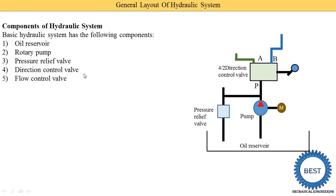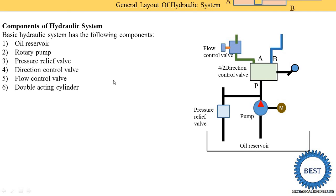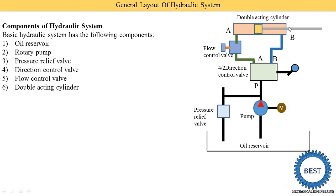The next component is the flow control valve, provided here. Then the next component is the double acting cylinder. Why is its name 'double acting'? Because inside it is a cylinder, and this yellow component is the piston. The oil is supplied to both sides of the piston — that's why it is called a double acting cylinder. Oil is either supplied to side A or side B, or it can be supplied on both sides.